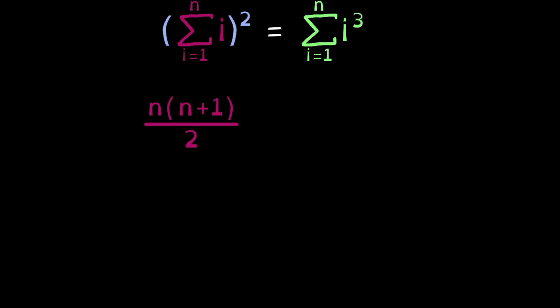If we plug this back into our original formula, we get that the left-hand side becomes n squared times n plus 1 squared over 4. Now we show that the sum of the first n cubes is equal to this formula, which we'll do by induction.